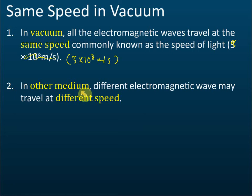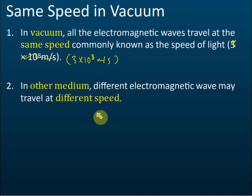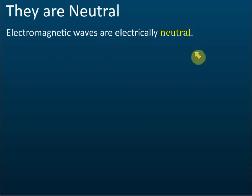In other mediums such as solids and liquids — like water or glass — their speed will be different. Different electromagnetic waves may travel at different speeds in other mediums. For example, in water, red light travels faster than blue light. Both red and blue light are electromagnetic waves. So: same speed in vacuum, different speeds in other mediums.